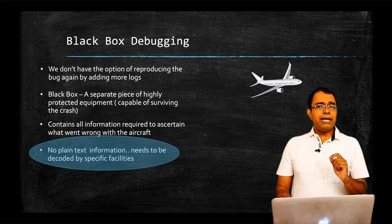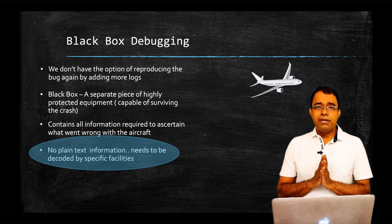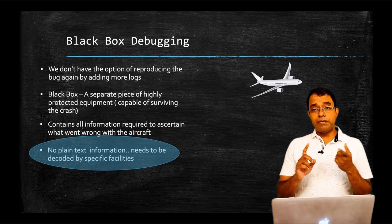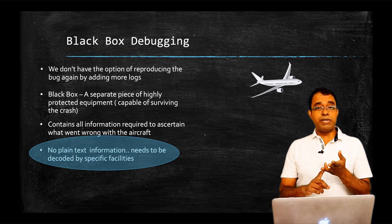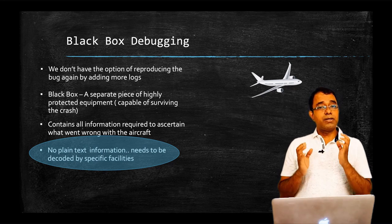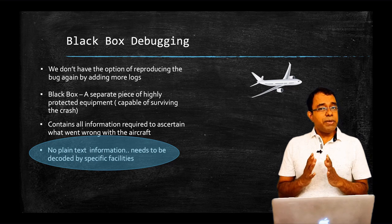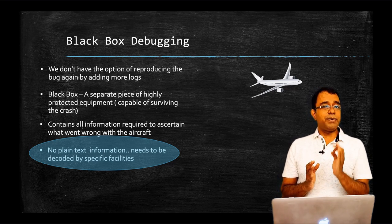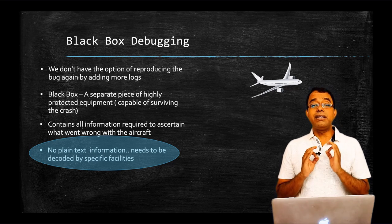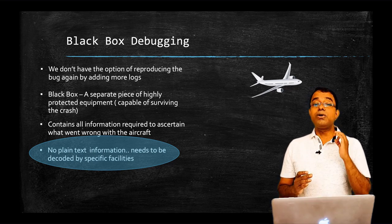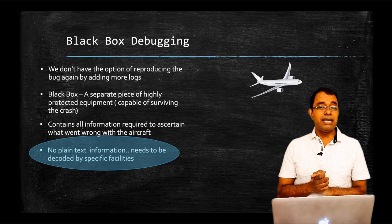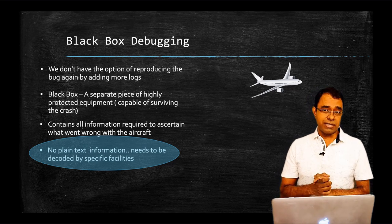But before we go ahead, you might have a question that why we need black box debugging in software? Now you agree that with the airplane, it's a life and death scenario, but software today controls almost all aspects of our lives from traffic lights to lifts to hospitals to medical equipment, everything. They are also capable of saving lives. So we have to make sure that we write software which actually performs its functions diligently. And if there is a bug, we need to find the root cause and fix it, not to patch it like increase the sleep timer or something like that. Those are dangerous fixes and catastrophic fixes.